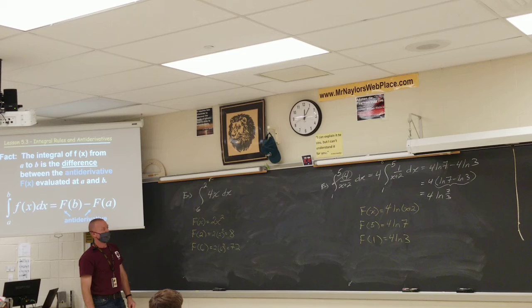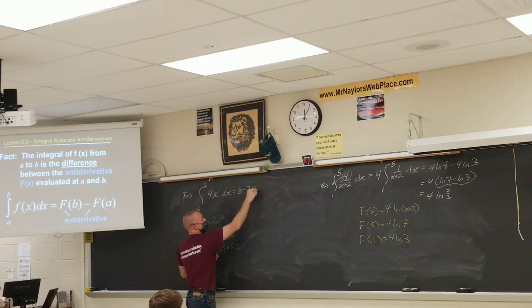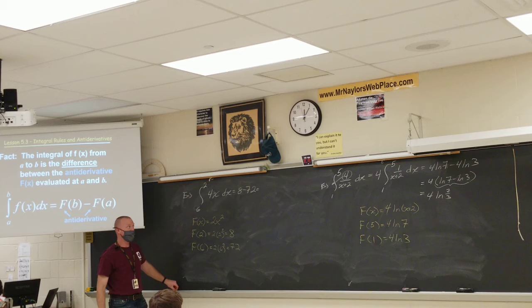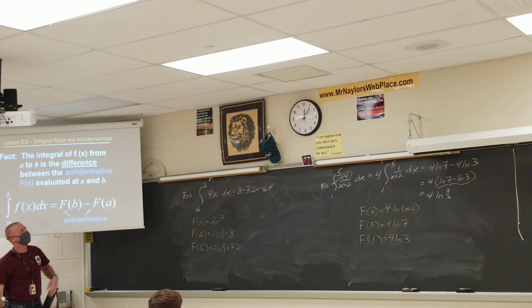Okay. Again, be careful. It's f of b minus f of a. So as many of you have done, which is great, it's 8 minus 72. I don't know if you kind of like questioned it, but the way this problem is set up, we need to end up with negative 64. Is that right? Negative 64.